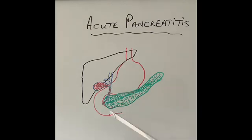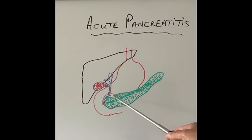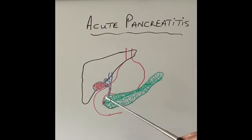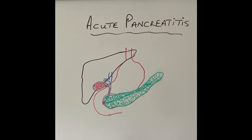That is gallstone pancreatitis, the commonest cause of acute pancreatitis. We are not exactly sure how alcohol causes acute pancreatitis — maybe it somehow sensitizes the pancreas so the enzymes get activated. It usually happens with heavy binging of alcohol, and the pancreas gets very inflamed.